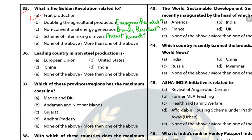Doubling the agriculture production is called the evergreen revolution. Non-conventional energy generation is known as the brown revolution. The scheme of interlinking of rivers is known as Amrit Kranti. Question 36: The leading country in iron and steel production is China.